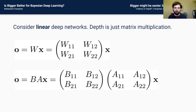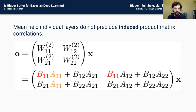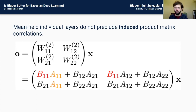Writing out the multiplication explicitly: even if each element of A and each element of B are independent of each other, the elements of the product matrix aren't necessarily independent. So by breaking a one-layer linear model into a multi-layer linear model, even though the distributions over each element might be mean field — diagonal, independent of all other weights — the distribution over the product matrix doesn't have to be mean field.